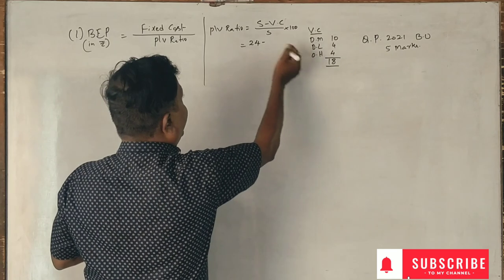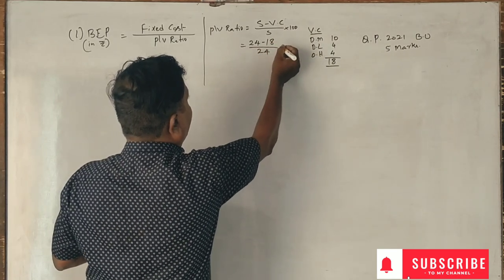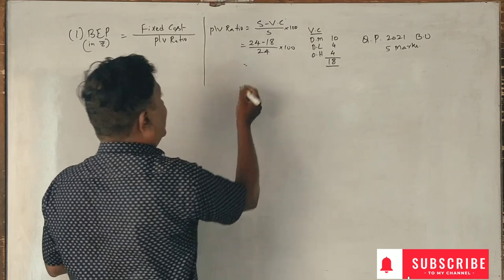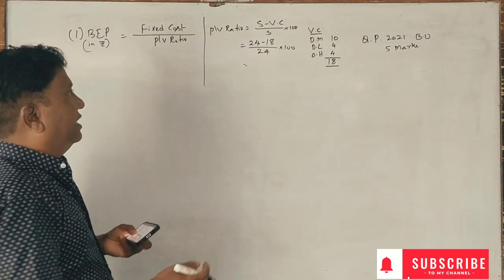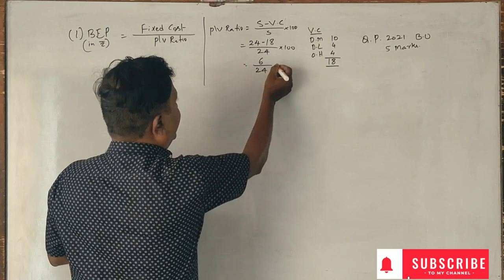So variable cost is 18 divided by 24 into 100. 24 minus 18 is 6, divided by 24 into 100.